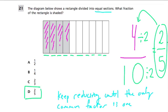Once the only common factor, that means a factor that the numerator and denominator share, is just one, then you're done reducing. So keep reducing until the only common factor is one. All right, thanks.